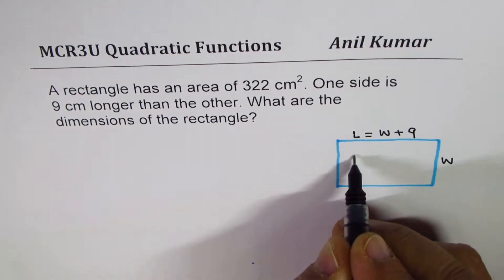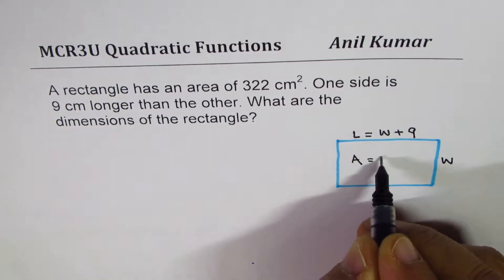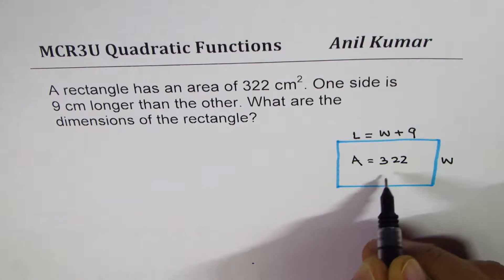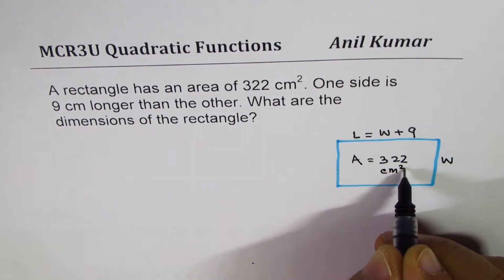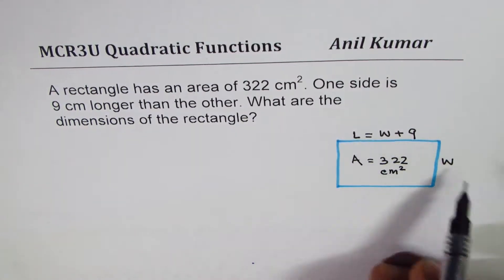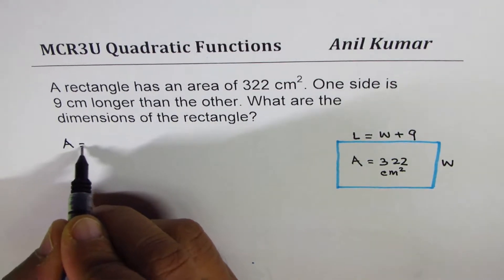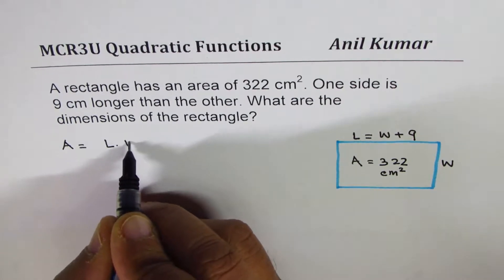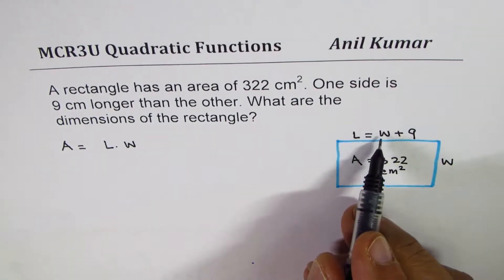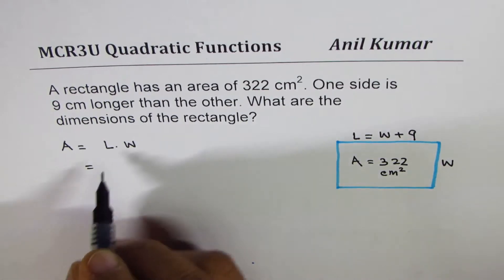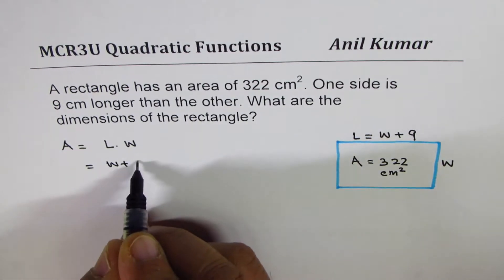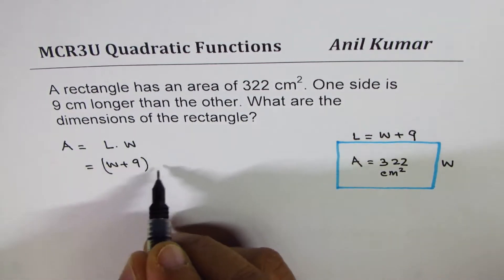We are given area equals 322 square centimeters. We need to find length and width, the dimensions of the rectangle. Now we know area equals length times width. Length is W plus 9, so we can replace length with (W plus 9) times W. Area is given to us as 322.